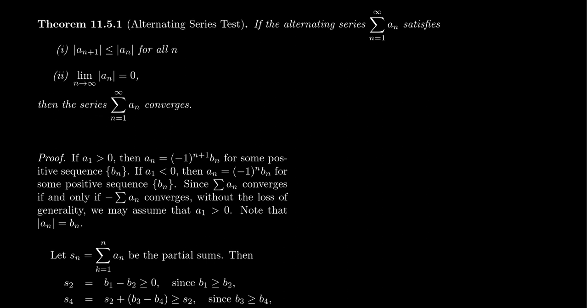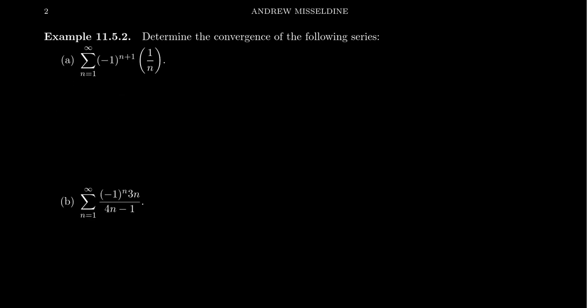To use the alternating series test, we have some alternating series — it switches between positive and negative. What we need is that if you ignore the negative signs and look at the absolute sequence, that sequence is decreasing towards zero. And if that happens, our alternating series will be convergent. So let's look at some examples.